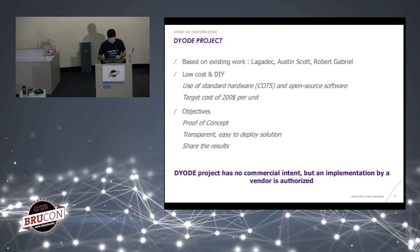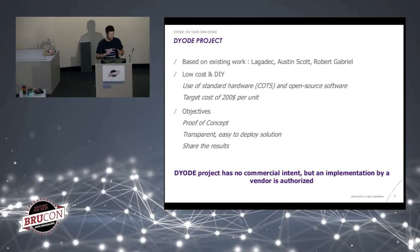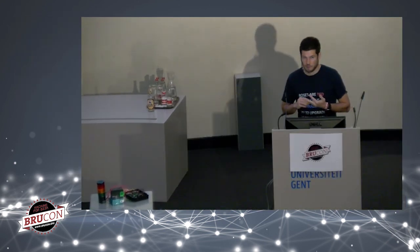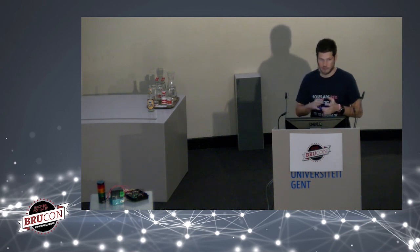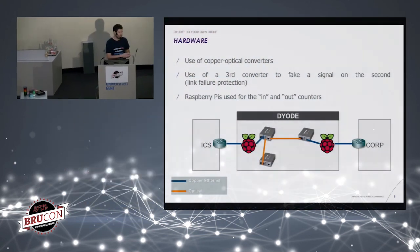This work is based on previous work from Philippe Lagadec, Austin Scott, and Robert Gabriel, who in the past also created DIY data diode concepts. But their solutions were not easy to repeat or reproduce. What we wanted was something low-cost, do-it-yourself using commercial off-the-shelf components and open-source software, with a target cost of about $200 per unit. The goal was a proof of concept — an easy-to-deploy solution. It's all open source, and I'm not selling anything today.